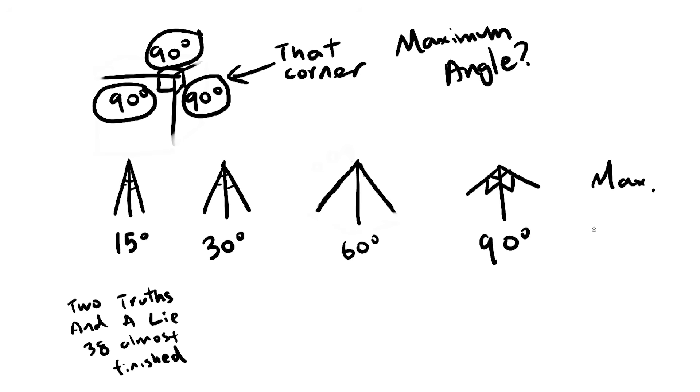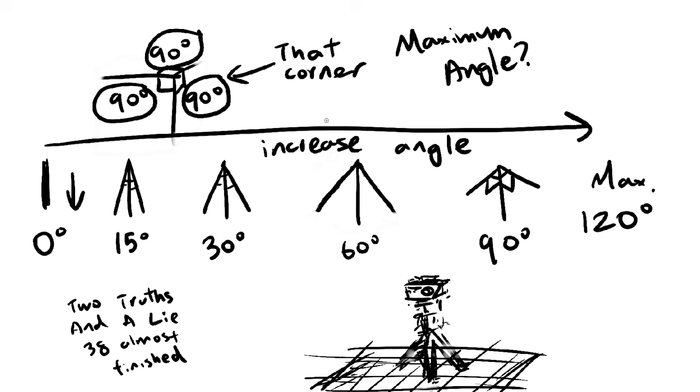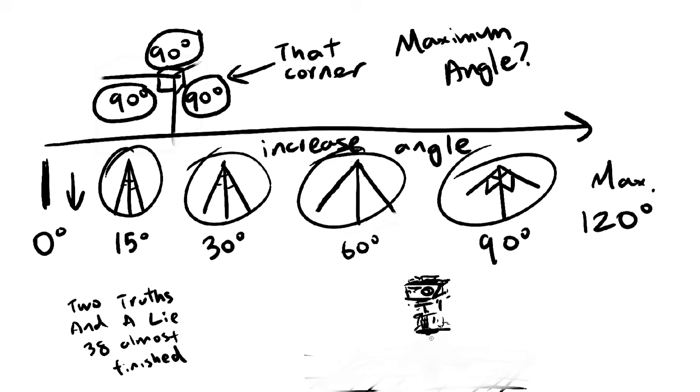Alright, back to the problem. The answer is 120 degrees. To figure this out, let's start with 0 degrees and work our way up. If all three angles are 0, that means all three lines are pointing the same way. As we increase the angle, the lines spread out like the legs of a tripod. We can keep spreading them out until the tripod is completely flat, where all three angles will measure 120 degrees.